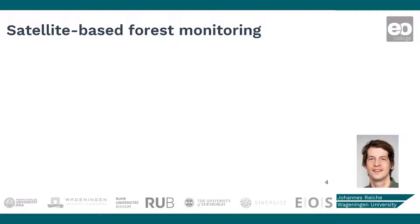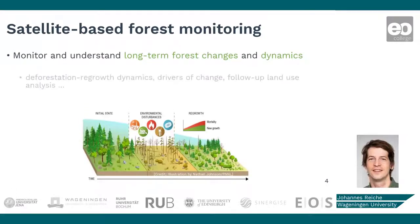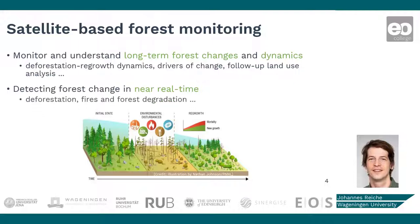With archives of satellite data dating back to the 1970s, we can now monitor and understand long-term forest changes and dynamics, including deforestation and regrowth dynamics, studying drivers of change, and follow-up land use. The new generation of Sentinel-1 and Sentinel-2 satellites now provide imagery every few days, allowing us to detect changes such as deforestation almost as they happen. This is what we call near-real-time forest change monitoring.